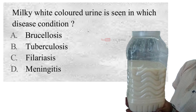Milky white colored urine is seen in which disease condition? A. Brucellosis, B. Tuberculosis, C. Filariasis, D. Meningitis. And the correct answer is C. Filariasis.